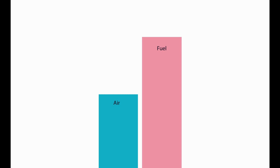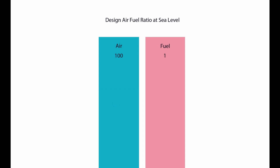Have you ever been behind a car belching black smoke from its tailpipe? That's because the engine gets too much fuel to the cylinders and cannot burn it all before it's exhausted — hence the black smoke. Too much fuel for the amount of air will cause the engine to run rough, eventually fouling the spark plugs. The engine will also run cooler than normal, causing other problems.